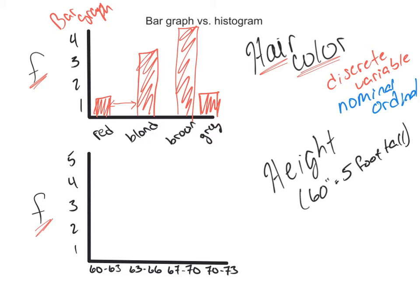Switching to histograms — the bottom graph — we're going to do height. Down here we have how tall people are, and it's in inches. Just keep in mind that 60 inches is five foot tall. I'm going to get frequency — how many people say they are between five foot tall and five foot three. Maybe two people say that. But because this is continuous data, my lines are going to touch.